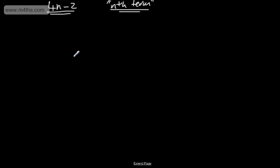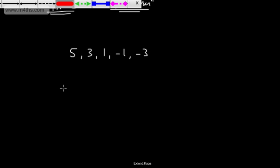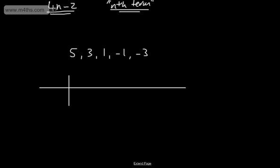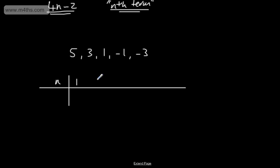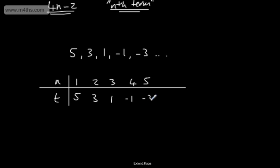Let's look at another one. This time we will have 5, 3, 1, minus 1, and minus 3. As we can see, this is going down by 2 each time. So what I'm going to do is put it in a table — this is a slightly harder example. We'll have n, the position in the sequence: 1, 2, 3, 4, 5. The terms are 5, 3, 1, minus 1, minus 3. It's going down by 2 each time.